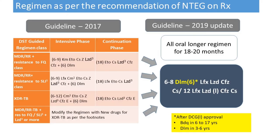Looking at the guidelines recommended for MDR-TB: in 2017 these guidelines were very complex, based on whether patients were pre-XDR with quinolone resistance, pre-XDR with aminoglycoside resistance, just MDR, or XDR, with various regimens. The new guidelines have simplified it — everybody goes on the same regimen, preferably oral therapy to avoid injectables, given for 18 to 20 months: six months of delamanid with levofloxacin, linezolid, clofazimine and cycloserine, then 12 months of the remaining four drugs after stopping delamanid.